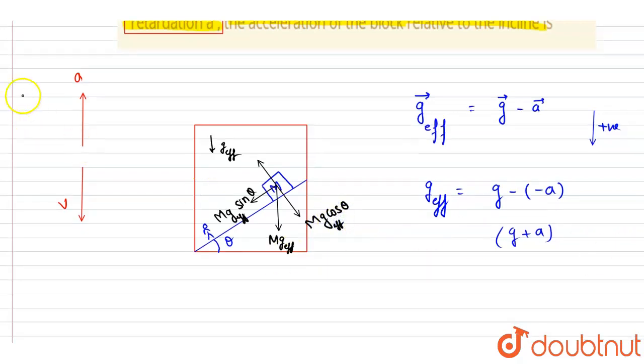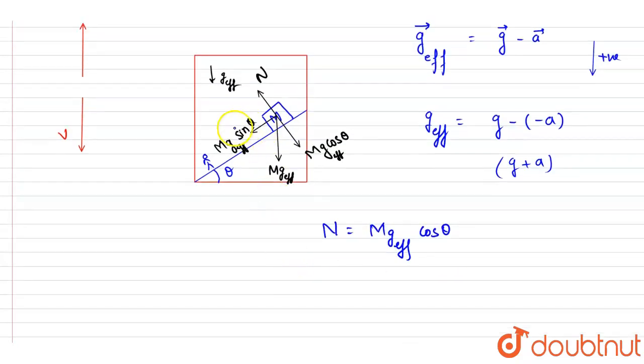So basically this cos component will balance the normal reaction, so I will write down N equals mg effective cos theta. And this mg sine, g factor I will write down.